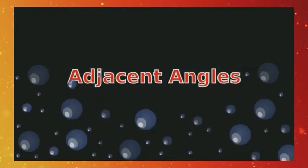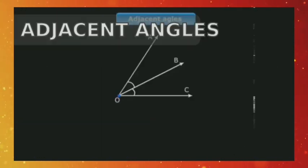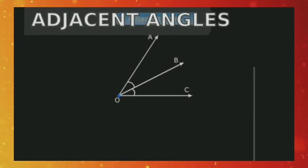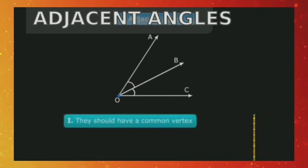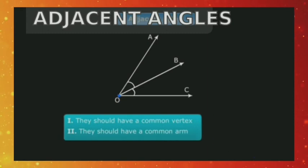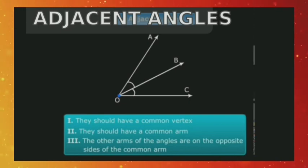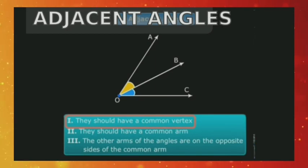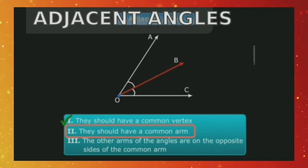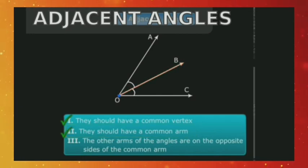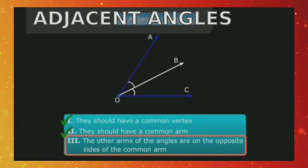Do you know what adjacent angles are? When two angles lie on opposite sides of a common arm and have a common vertex, they are known as adjacent angles. The conditions for two angles to be adjacent are: they should have a common vertex, they should have a common arm, and the non-common arms are on either side of the common arm. Look at angles AOB and BOC — they have a common vertex O, satisfying the first condition. They have a common arm OB, satisfying the second condition.